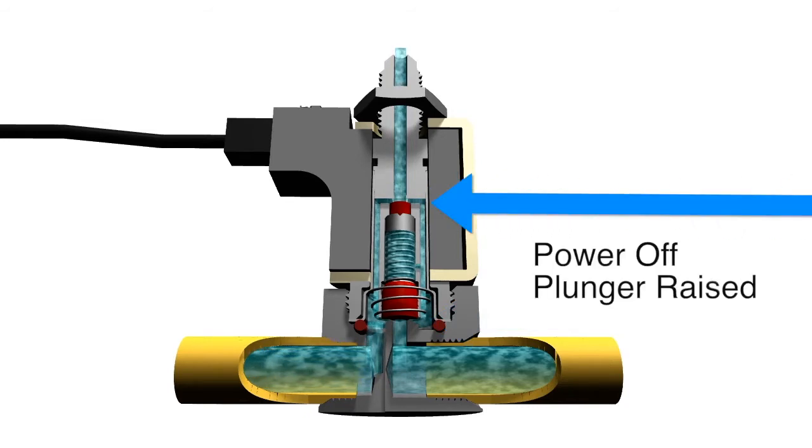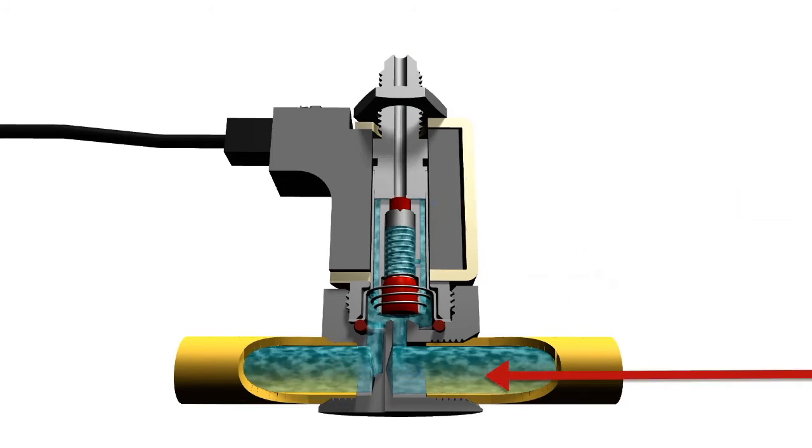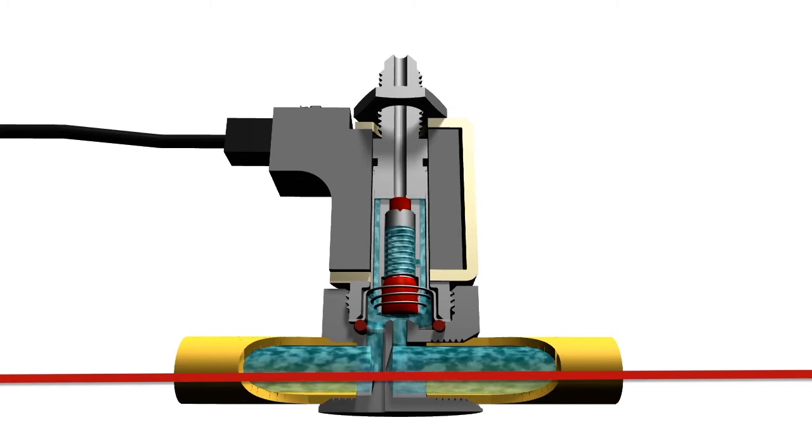When the power is off, the plunger is raised, which seals off the stop orifice and opens up the body orifice, allowing flow through the valve from the body orifice port and out the cavity port.